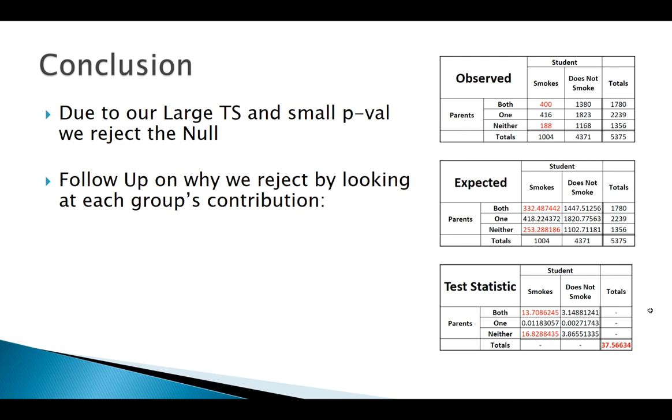The way we figure that out: we look at each cell's contributions, and we notice any large contributions. Here's a pretty big one, here's a pretty big one. So I look back at these contributions that I have in red here. Now remember, a large contribution doesn't tell us if our observed is way more than what we expected or way less, so we have to go back and examine that ourselves.